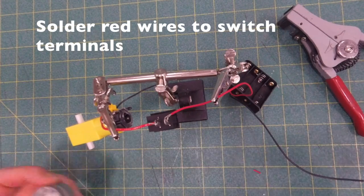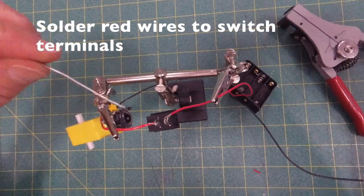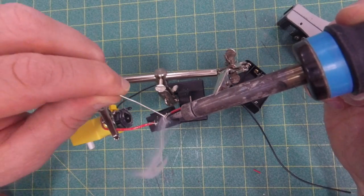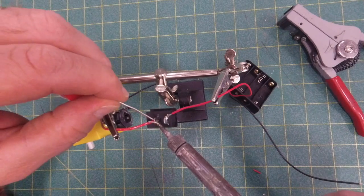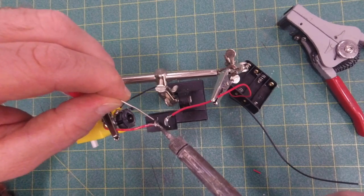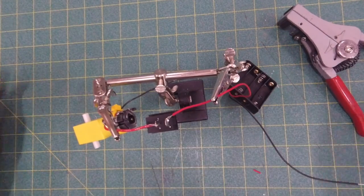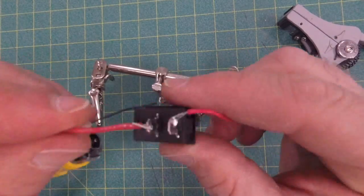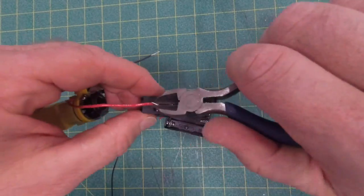We're going to solder both red wires to the switch now. And now I'm actually soldering this switch that we're using for this project. You can see it goes pretty quickly—you just got to get it heated up, get the solder in there, and pull that out.